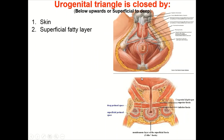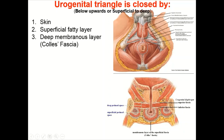Going from below upwards in anatomical position — or superficial to deep in lithotomy position — we have: first, skin; then superficial fascia containing two layers: a superficial fatty layer and a deep membranous layer. So the sequence is skin, then superficial fascia fatty layer, then the deep membranous layer, which is called Colles' fascia or the membranous layer of superficial fascia.